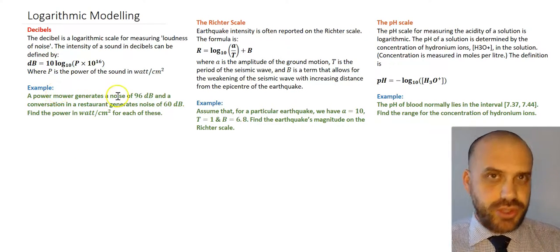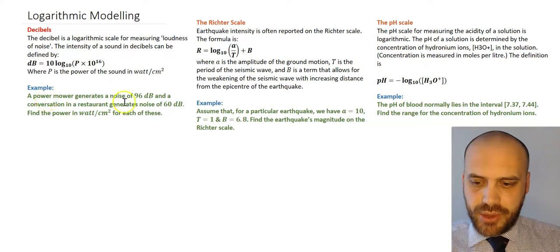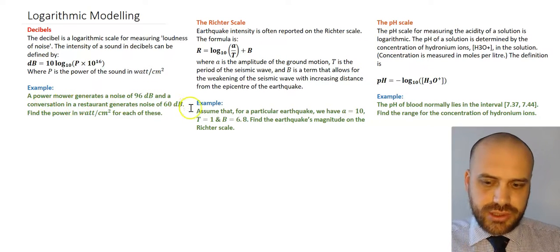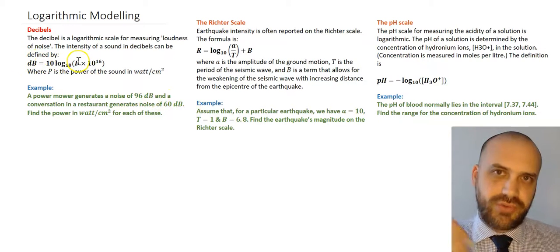In this first question, there's two things you're being asked to find. The power in watts for both a power mower and a conversation in a restaurant. So you've been told the decibels for both, so you're just subbing decibels into that equation and then solving for p.